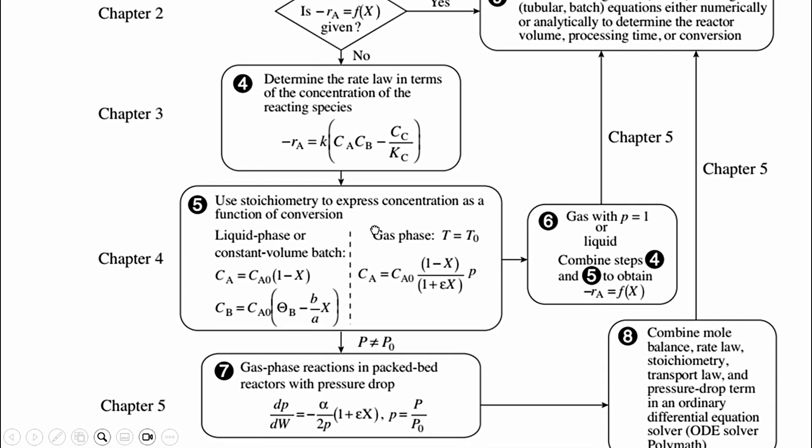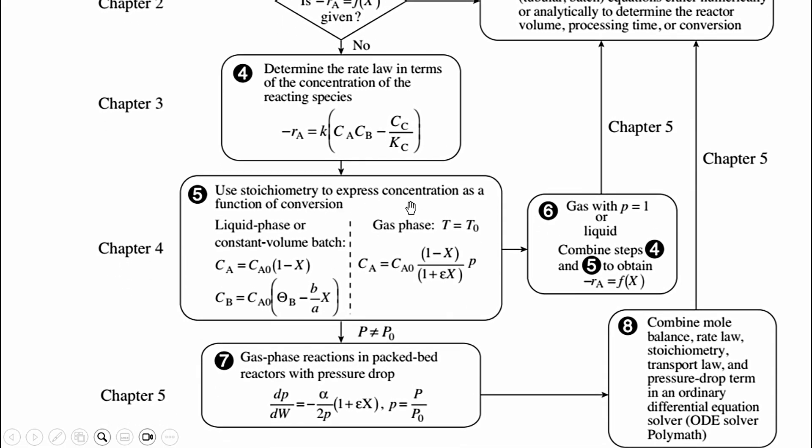Then we move to chapter number four which is stoichiometry. Use stoichiometry to express concentration as a function of conversion. If you remember, we had derived different relations. Liquid phase or constant volume batch: CA = CA0(1-X), CB = CA0(θB - b/A·X). If it is a gas phase, and for constant temperature because we are discussing isothermal reactors, T = T0. However, it is not mandatory that P = P0. Accordingly, it becomes CA = CA0(1-X)/(1+εX)·P/P0, where P is the ratio of pressure.